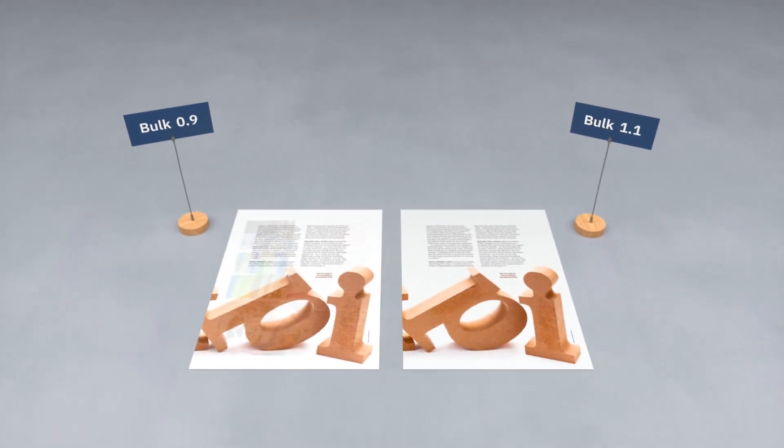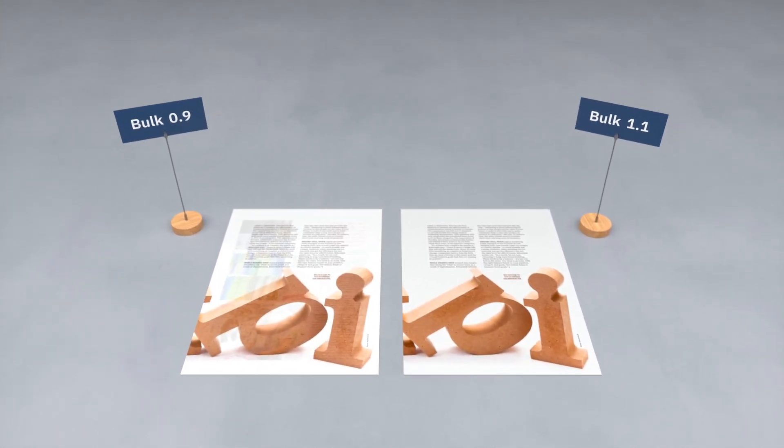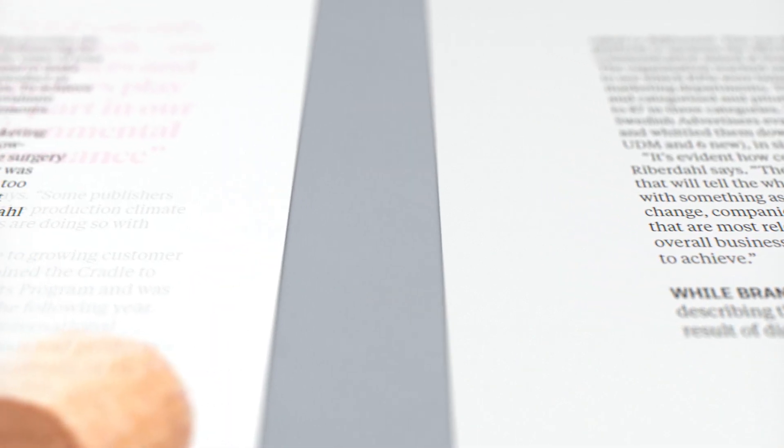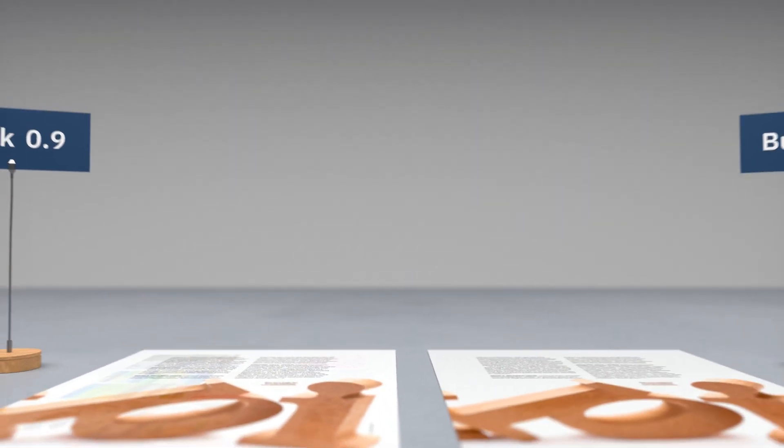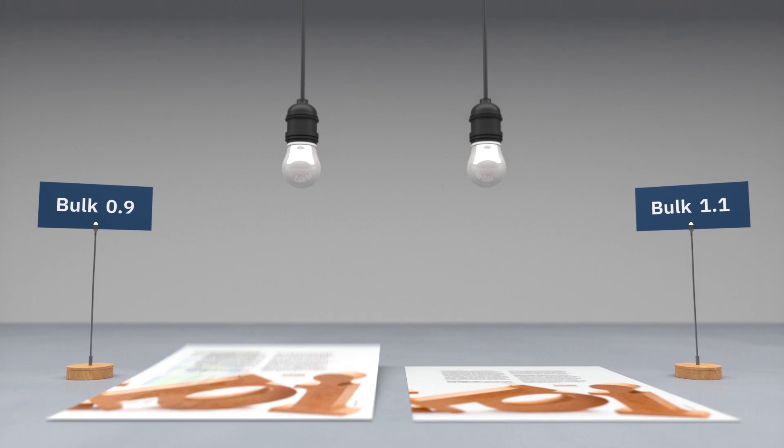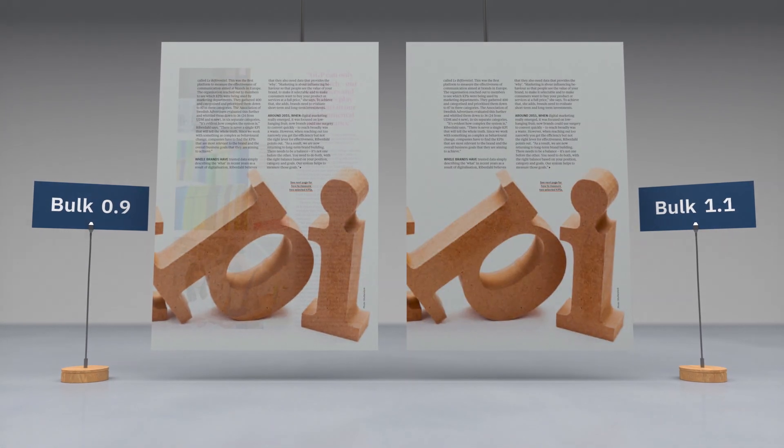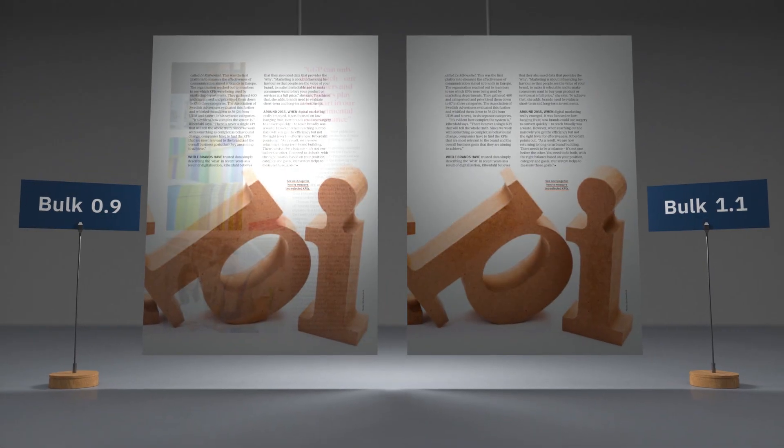And there are even more benefits with using a high bulk paper. Since the paper contains more air and is thicker, you get a higher opacity compared to a paper with the same grammage but lower bulk. The opacity is a measurement that tells you the amount of light which can be transmitted through the paper sheet. Although these two papers weigh the same, the bulk makes a big difference to the opacity.